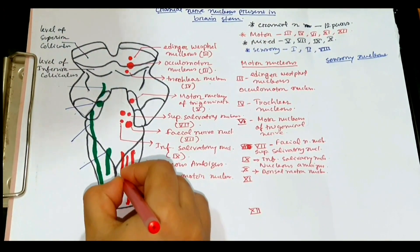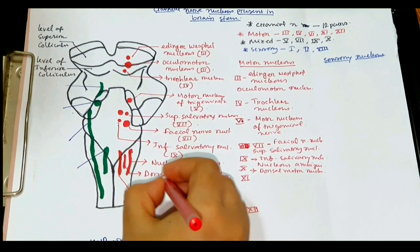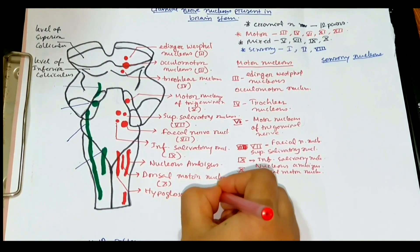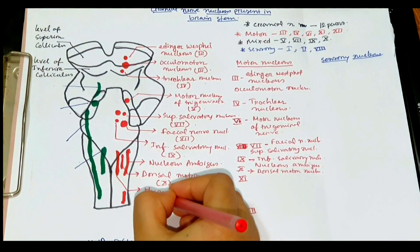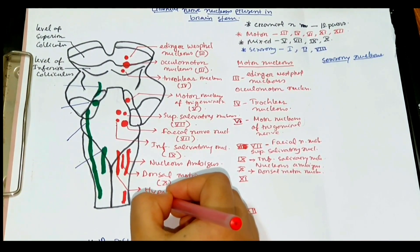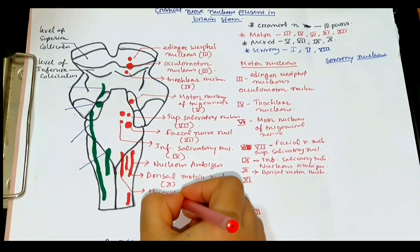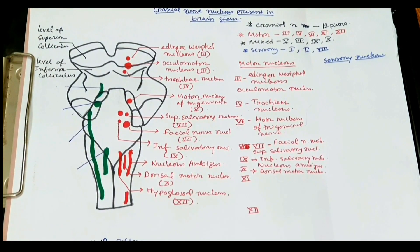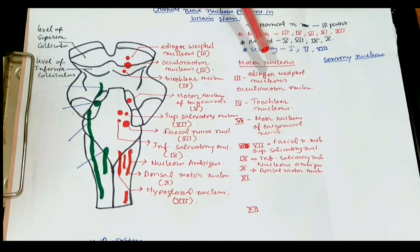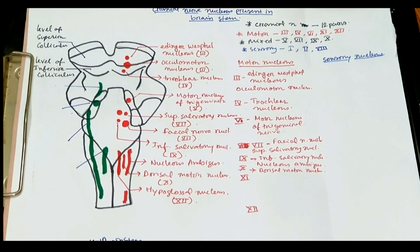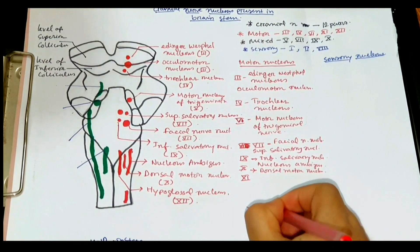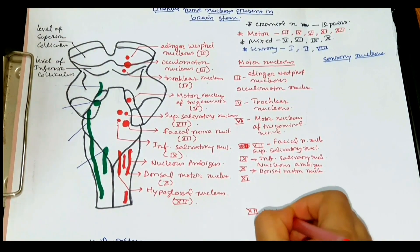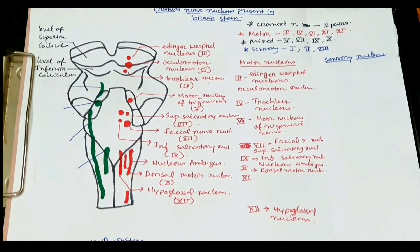There is another nucleus called the hypoglossal nucleus, which is the motor nucleus of cranial nerve twelve. The hypoglossal nucleus is the motor nucleus of cranial nerve twelve.